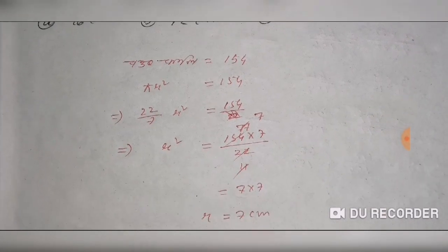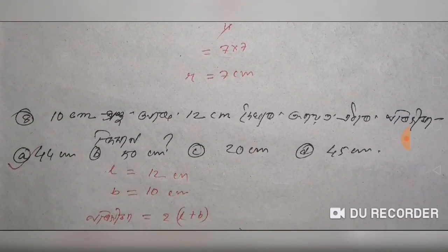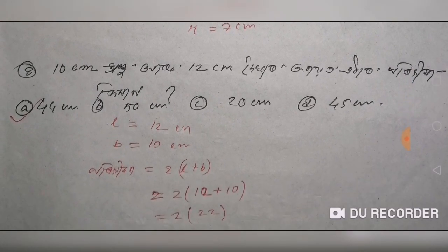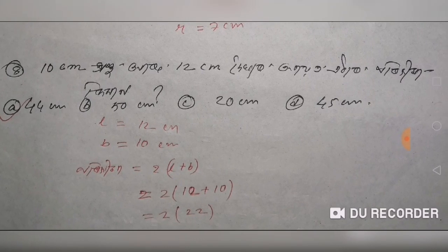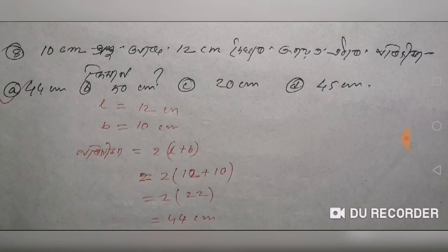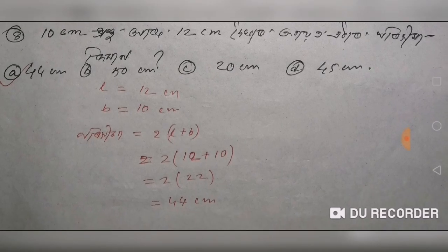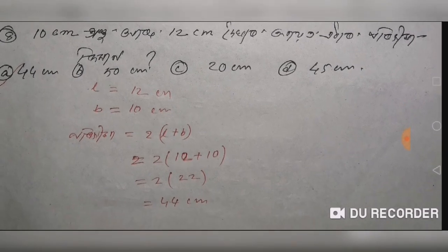Option D is equal to 2. The next question is: 10 cm plus 12 cm. How is equal to 3? So 2 times L plus B. L means D and B is equal to 2. L is 12 and B is 10. L plus B equals 12 plus 10, which is 2 into 22, so it's equal to 44 cm. Option A.